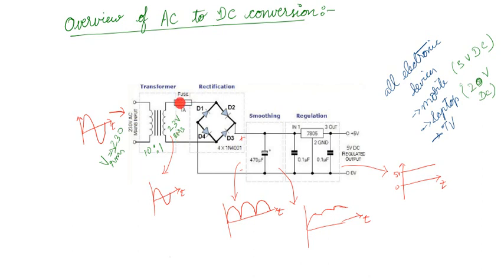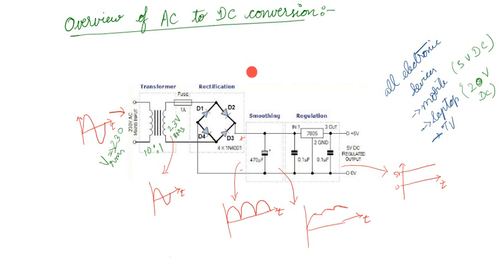Then we need a fuse. The fuse is required because if more current flows — suppose the voltage increases, more current will flow. If current beyond 1 ampere flows, the entire setup will get damaged; the diode will get breakdown. To protect that, we use a fuse, such that the current can flow up to only 1 ampere. If it exceeds 1 ampere, the fuse will blow. So this entire circuit can handle a maximum current of only 1 ampere.